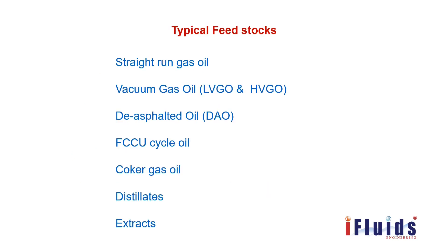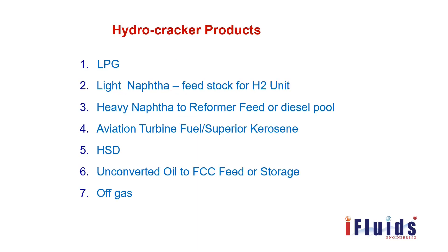The feedstock for the hydrocracker unit includes straight-run gas oil, vacuum gas oil (VGO) — which is the LVGO or HVGO from the vacuum distillation unit — deasphalted oil from the asphalt unit, FCC cycle oil from the FCCU, coker gas oil from the delayed coker unit, and distillate extracts from the lubrication unit that cannot be used directly as products. All these streams combined form the feedstock for the hydrocracker unit.